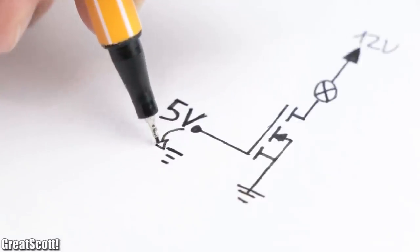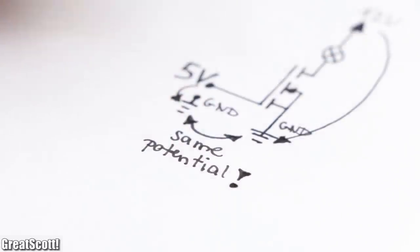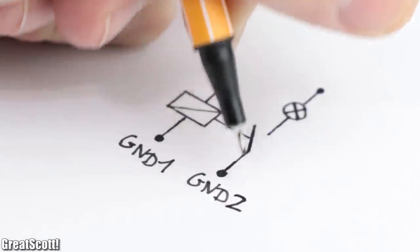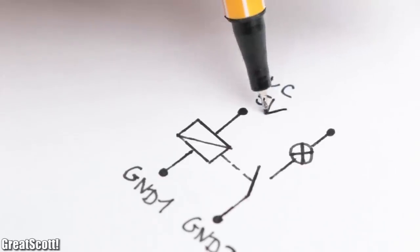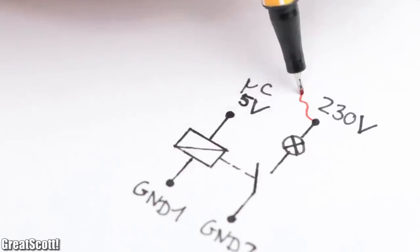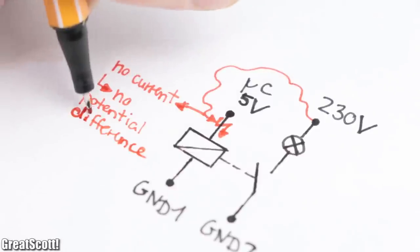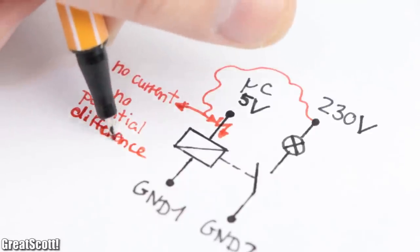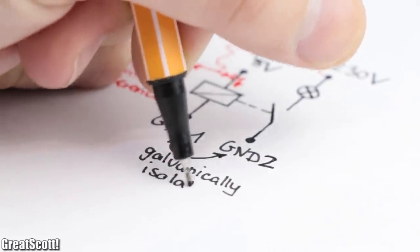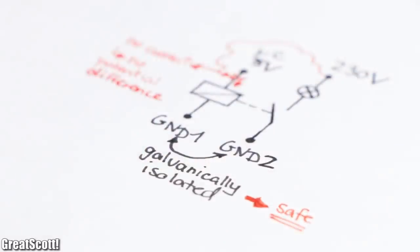Next, the MOSFET's control voltage and the load we want to switch need the same voltage ground potential, while the relay's control and load ground potential doesn't have to be the same. We can use 5 volts from a microcontroller and turn on 230 volts at the switch without having to worry that the microcontroller could get destroyed by 230 volts accidentally touching the control signal. That means both circuit parts are galvanically isolated from one another, which is an important safety feature.